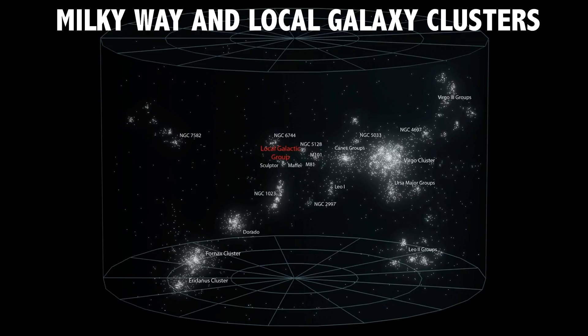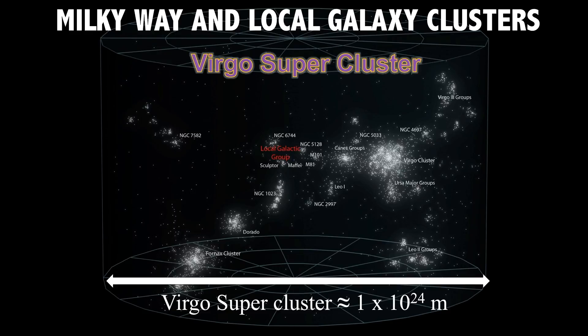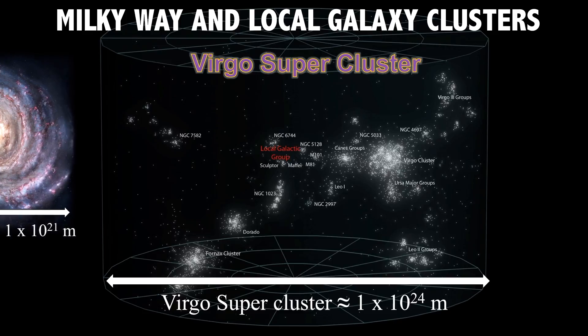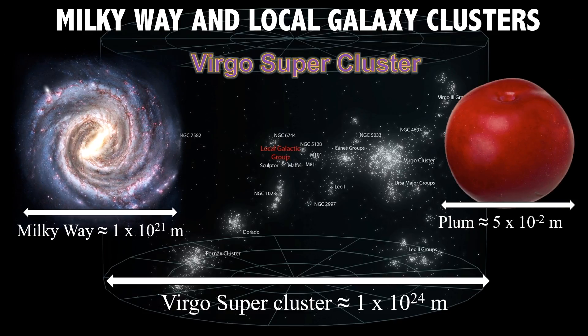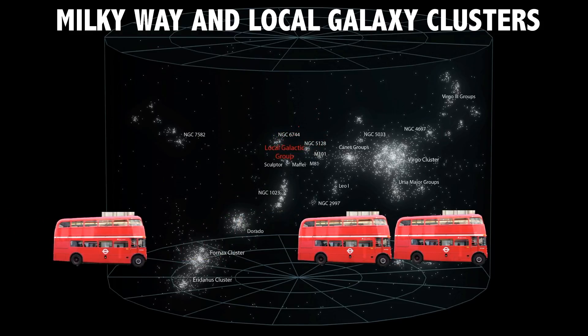Gravity keeps galaxies in clusters, and the Laniakea Supercluster's where we are. So if the Milky Way had the proportions of a plum, the cluster would be four double-deckers in diameter.